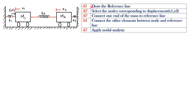There are five steps needed to draw the mechanical network. Step one: draw the reference line. Step two: select the nodes corresponding to the displacements X1 and X2. Step three: connect one end of the mass to the reference line. Step four: connect the other elements between node and the reference line. Step five: apply nodal analysis. Step six: apply the Laplace transformation of the equation, then find F of S divided by X2 of S.